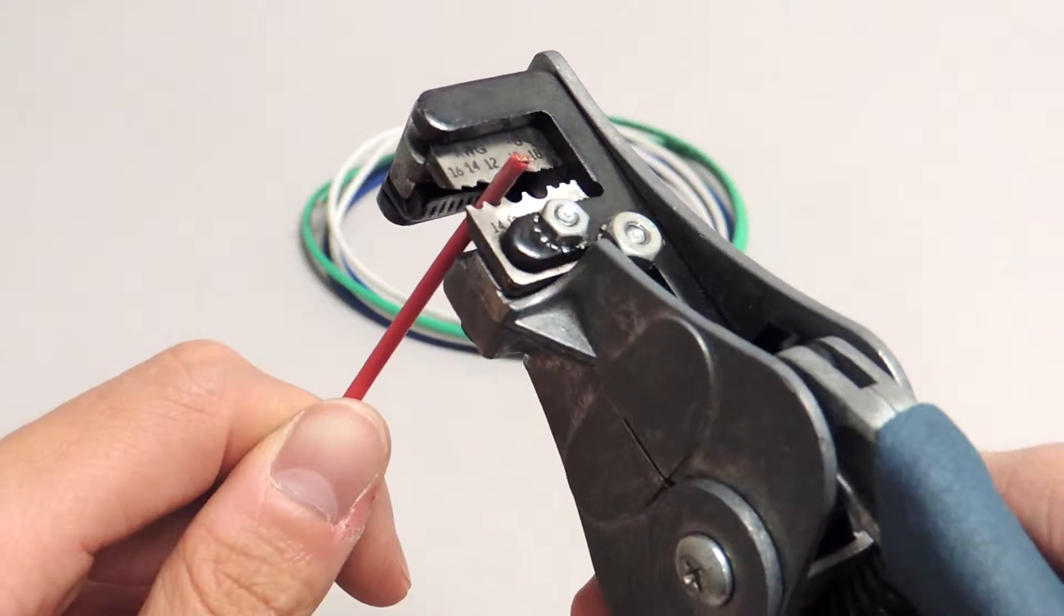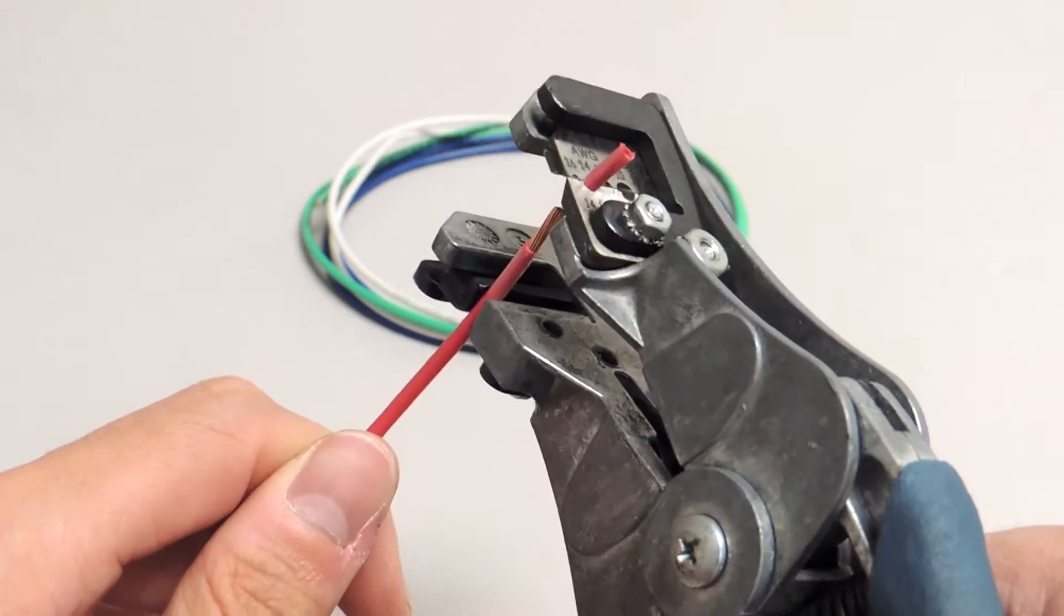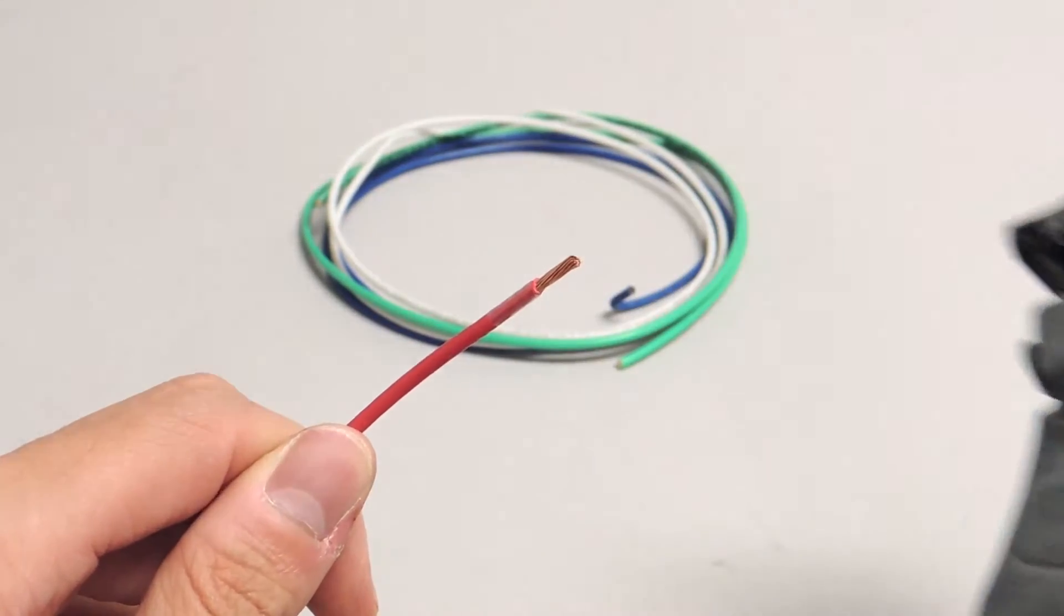You should prepare a blue, white, red, and green wire to each have two stripped ends.